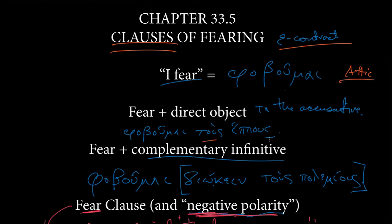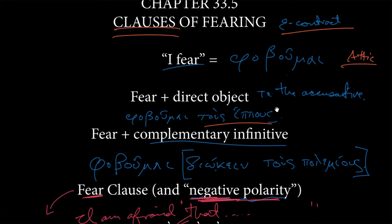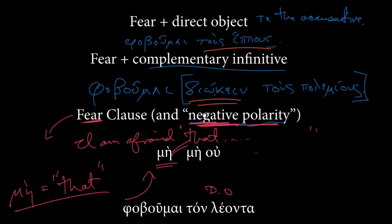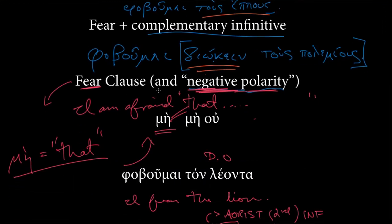We can do a lot of things with fear. We can just give it an accusative direct object, I fear the horses, I'm afraid of the horses. We can do it with a complementary infinitive, again, just like English. I'm afraid to pursue, or I'm afraid of pursuing, we might say, the enemy. But then we also have this fear clause, which exhibits this negative polarity that linguists get excited about. We're using μή as our conjunction to express that, and μή οὐ is our negative.